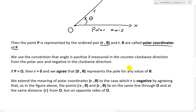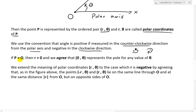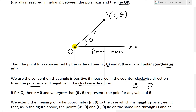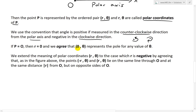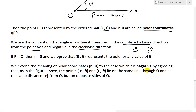R and theta are called the polar coordinates of P. We use the convention that the angle is positive if measured counterclockwise from the polar axis, and negative in the clockwise direction. Also by convention, if P is at the origin O, then we agree that the point (0, theta) represents the pole for any value of theta. Because if R is zero, the point is at the pole — it doesn't matter how many times you spin around the origin, you're still at the origin.